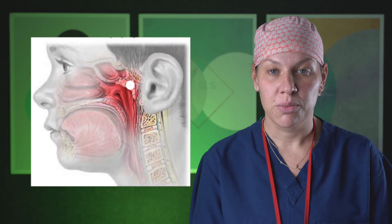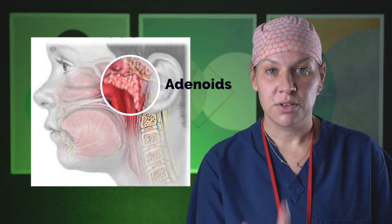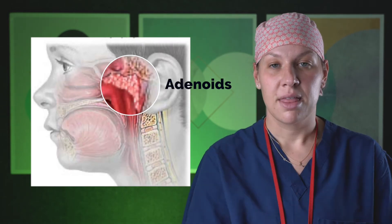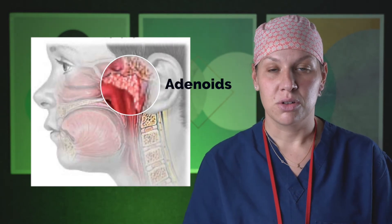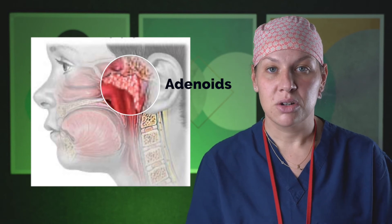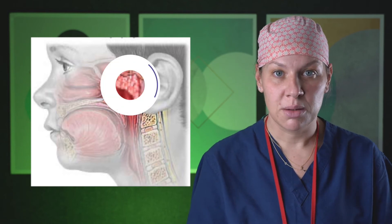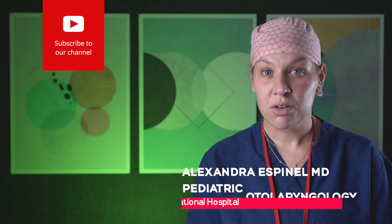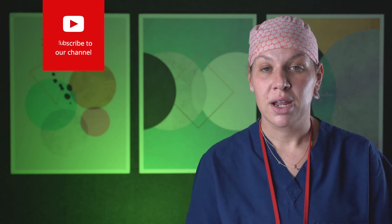The adenoids are in the back of the nose where the nose meets the throat. Imagine if you were to draw a straight line in your nose going back — that's where your adenoids are located. You can't see your adenoids based on a normal physical exam. To visualize your adenoids, you need to either put a camera in your nose or get an x-ray of the face.